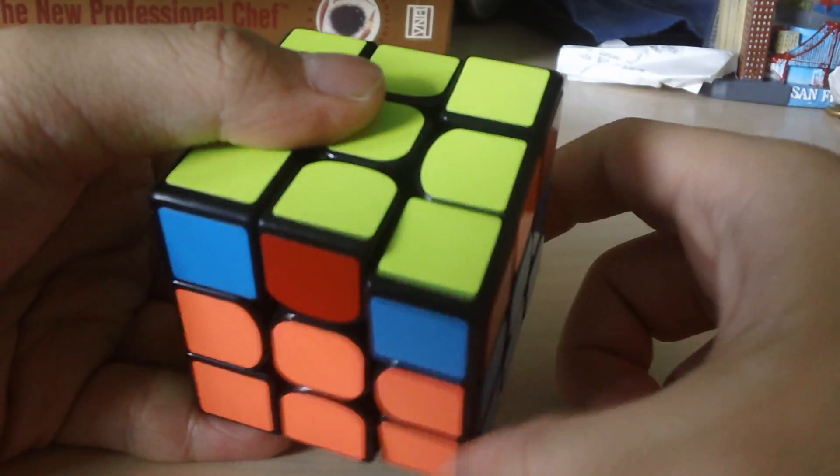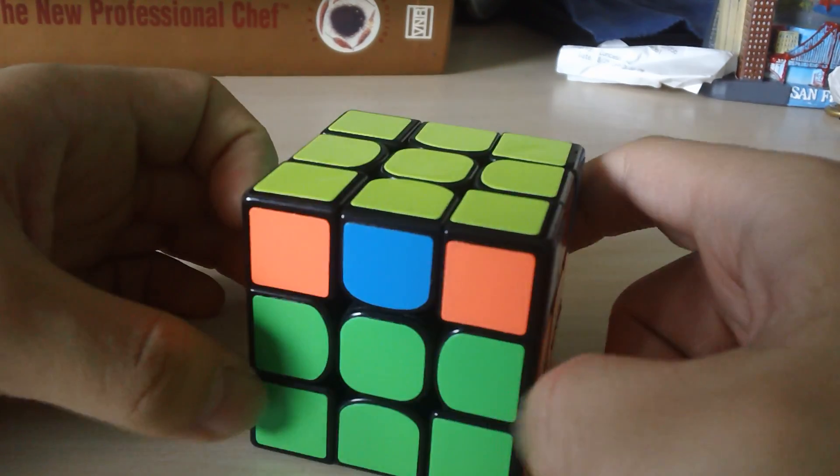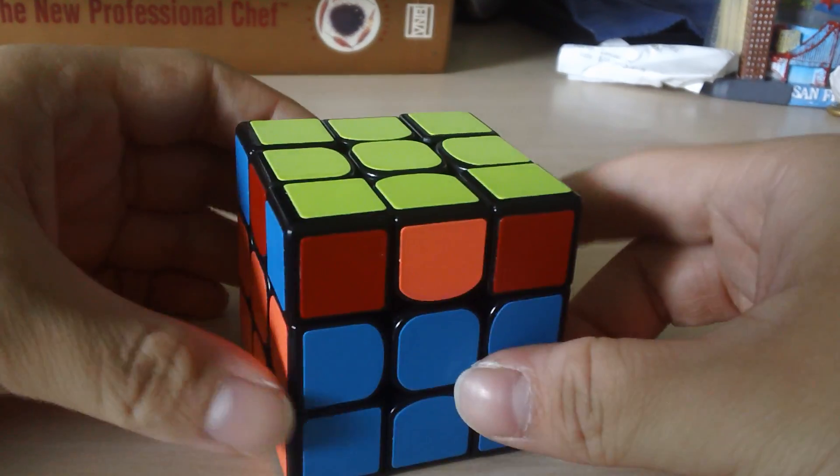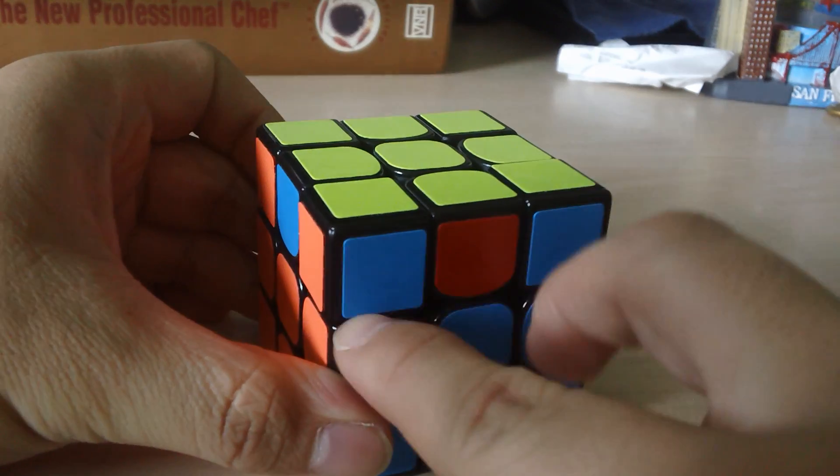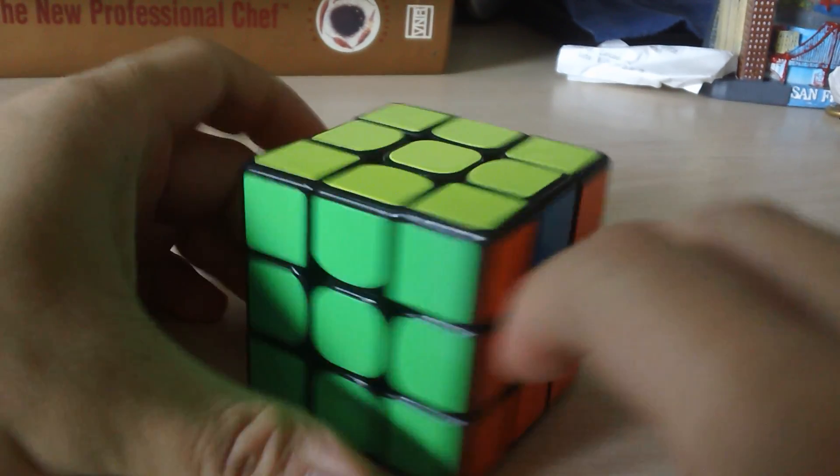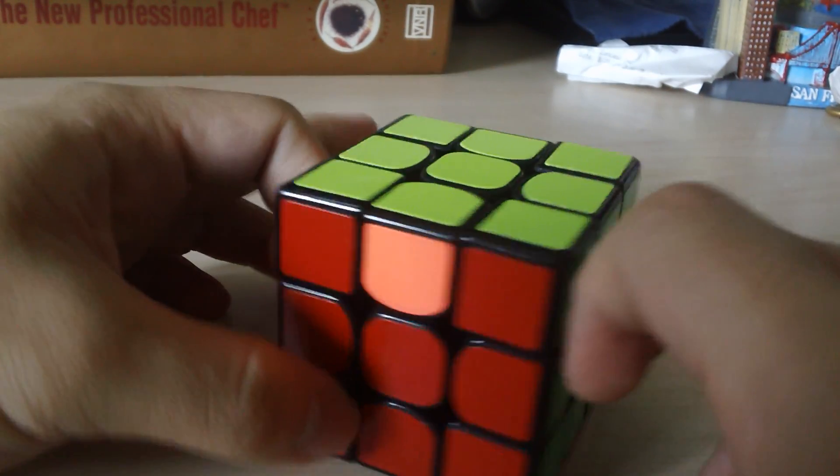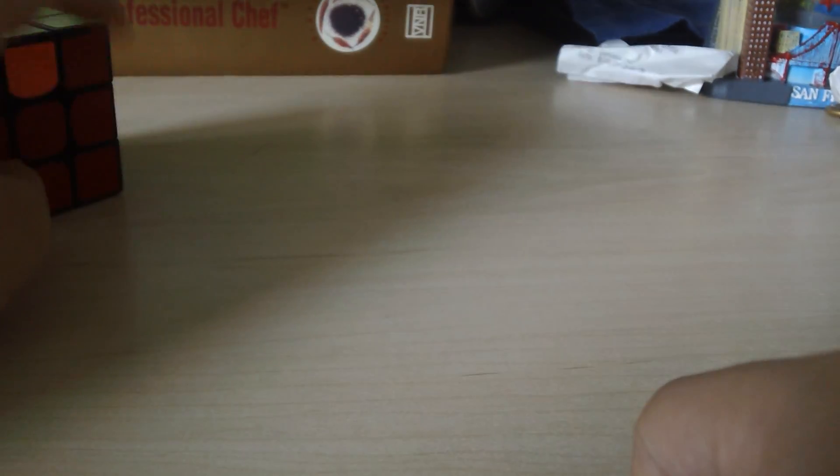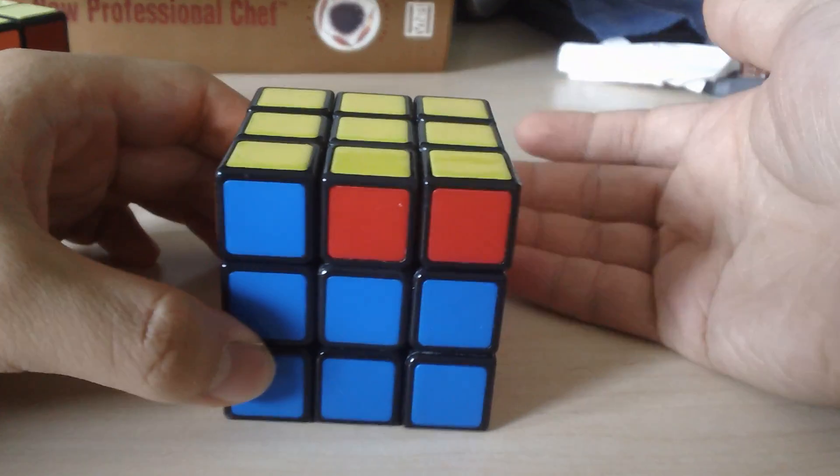Now you can see if I just align the top layer, there should be headlights on every single side. Now that algorithm again is right, front, right, back